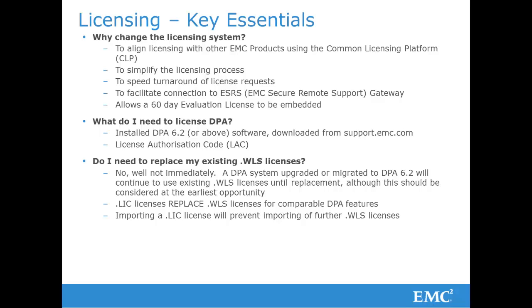The new licenses replace the .wls licenses with comparable features. Care needs to be taken in ordering new licenses because of the replacement nature of the licenses. For example, if you currently have 100 terabytes of Avamar coverage and you are moving to 120 terabytes, if you order a license to cover the extra 20 terabytes and install it, the new license will replace the original license. It is not an additive process — therefore you would only have 20 terabytes of coverage.